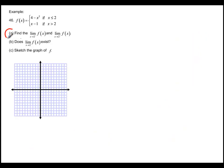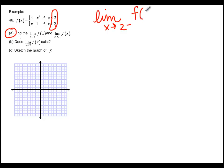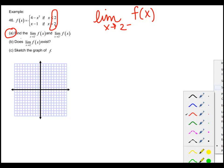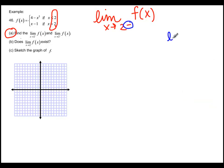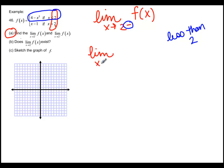Part A: find the left and right-sided limits at 2. The only way we can find a limit at a place where a piecewise function breaks is to look at it from the left side and the right side. For the limit as x goes to 2 from the left, we need to figure out which function to use. Being on the left side means we are less than 2, so we're going to use the top function. We're taking the limit as x goes to 2 from the left of 4 minus x squared.